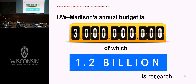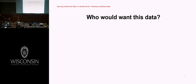In the UW-Madison context, our annual budget is $3 billion a year and over a third of that is research. You can just look at the dollars there and know that's valuable. Are we being good stewards of the research data that we're helping faculty, scientists, and other researchers collect and generate? Are we being good stewards of that data and of the federal agencies that have granted us that money to do this research? So who would want this research data?